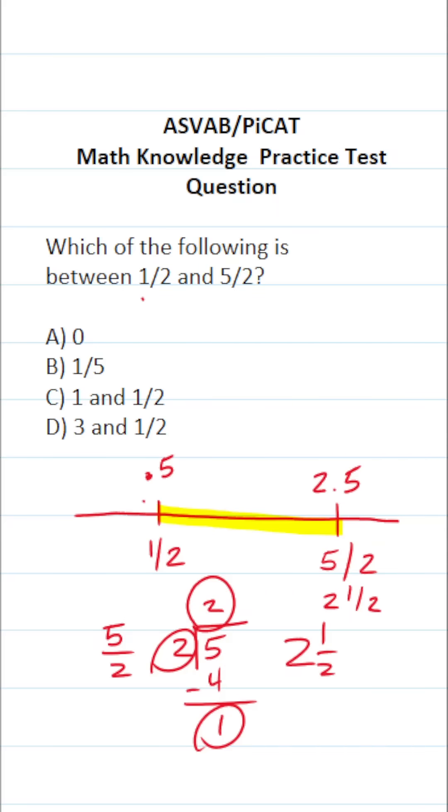All right, so now that I've made that as clear as possible, let's go through these one by one. 0 is somewhere over here. It's not between those two numbers. 1/5, you should know that 1/5 is the same thing as 0.2, which is outside those two numbers.